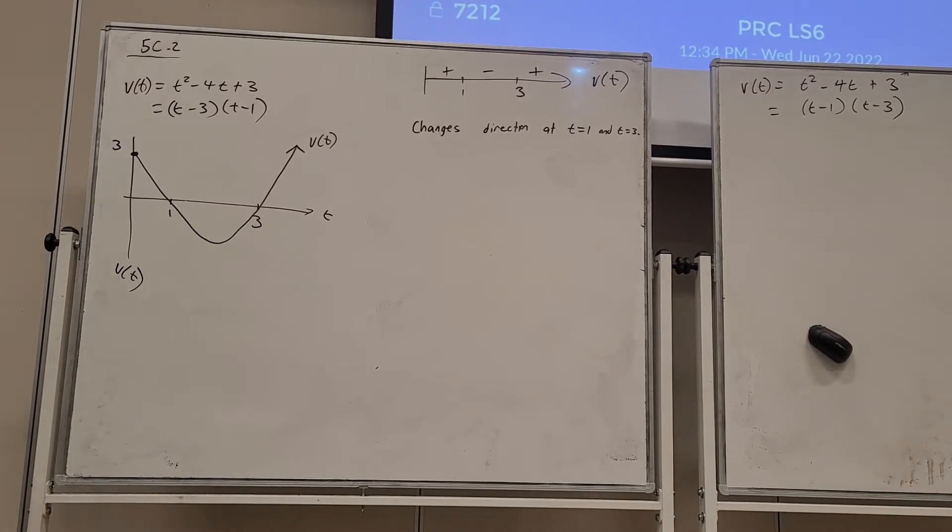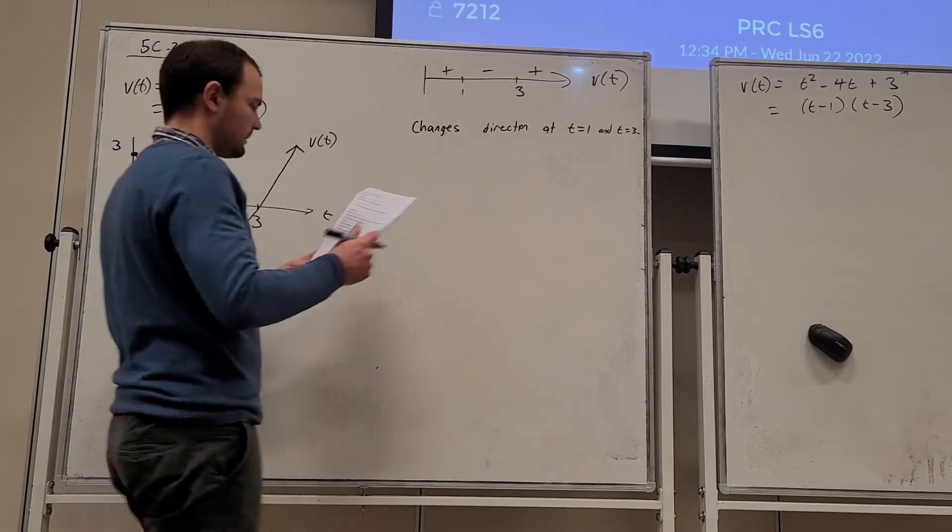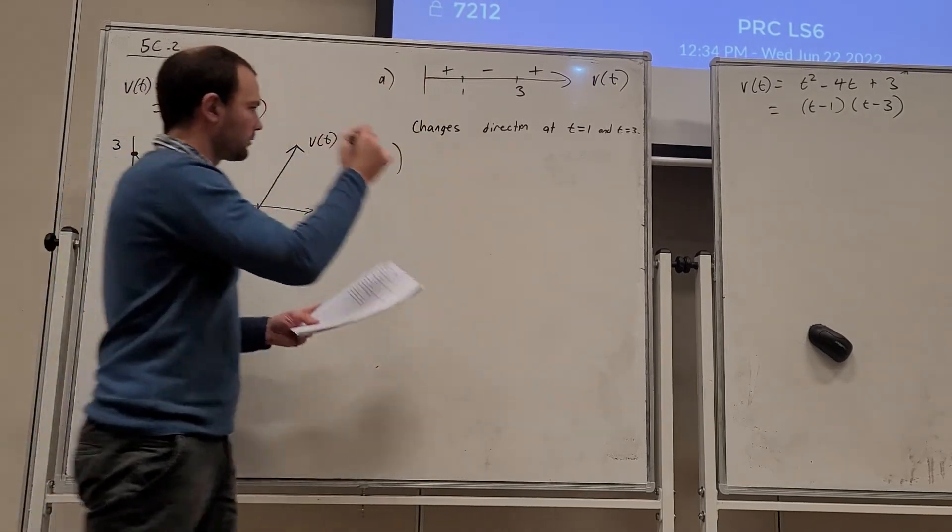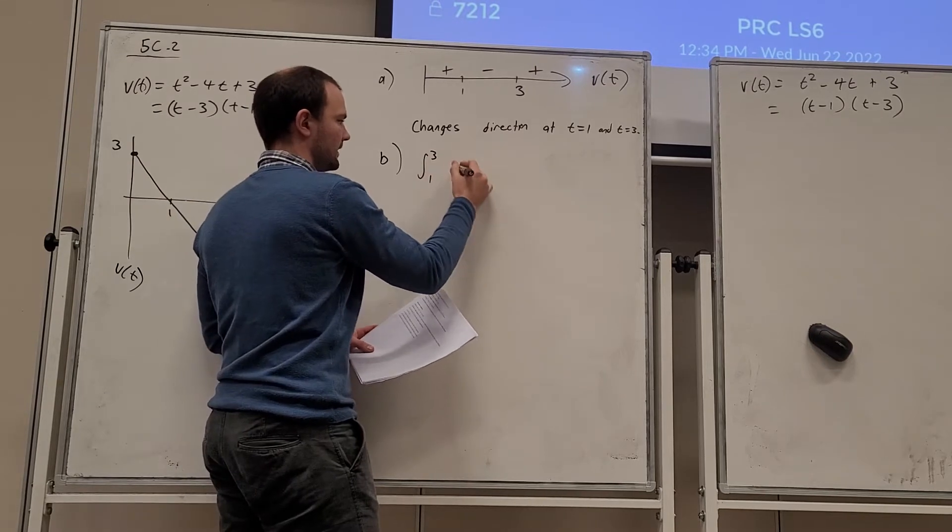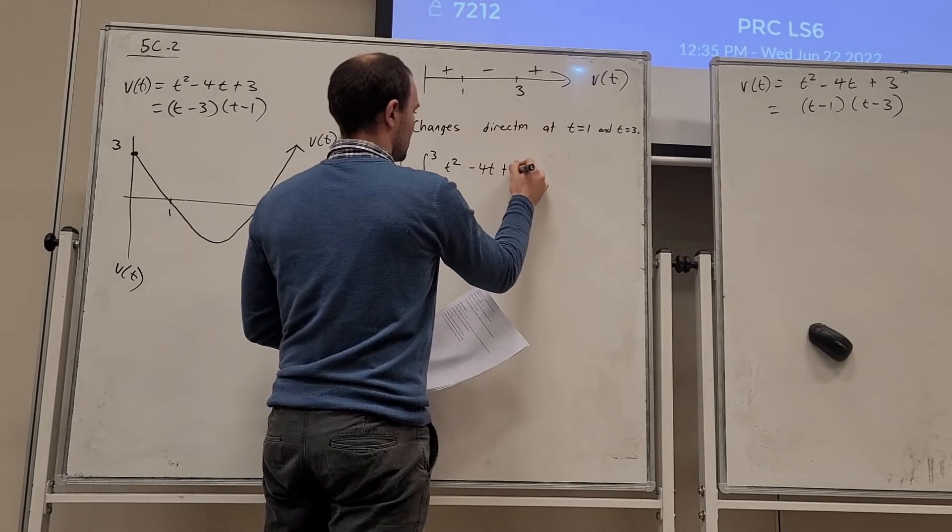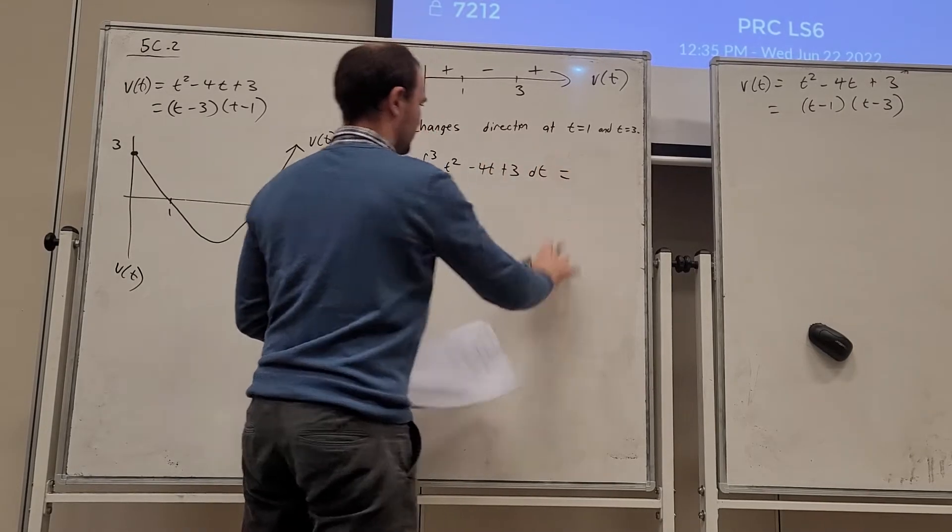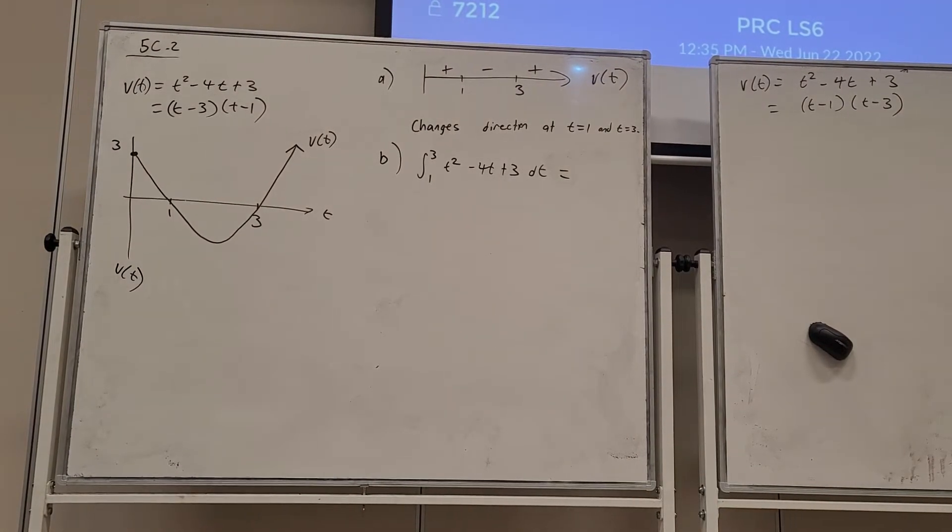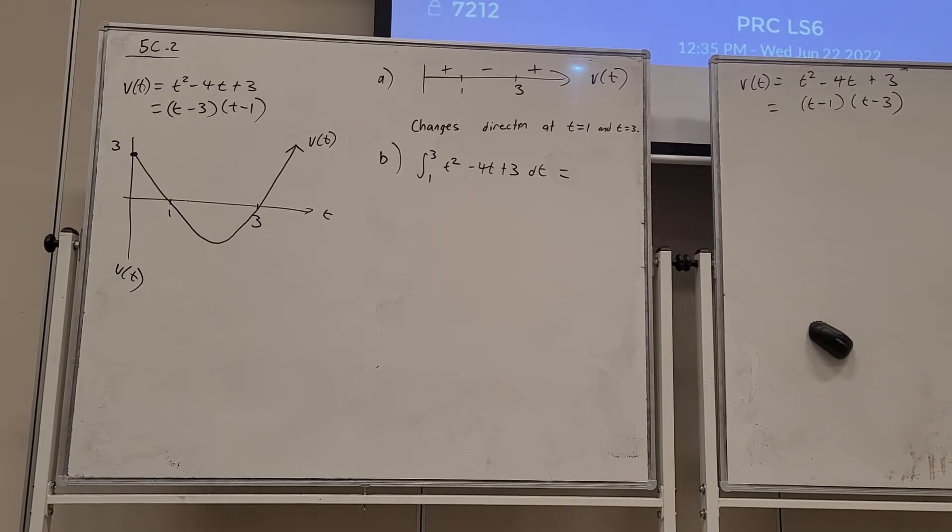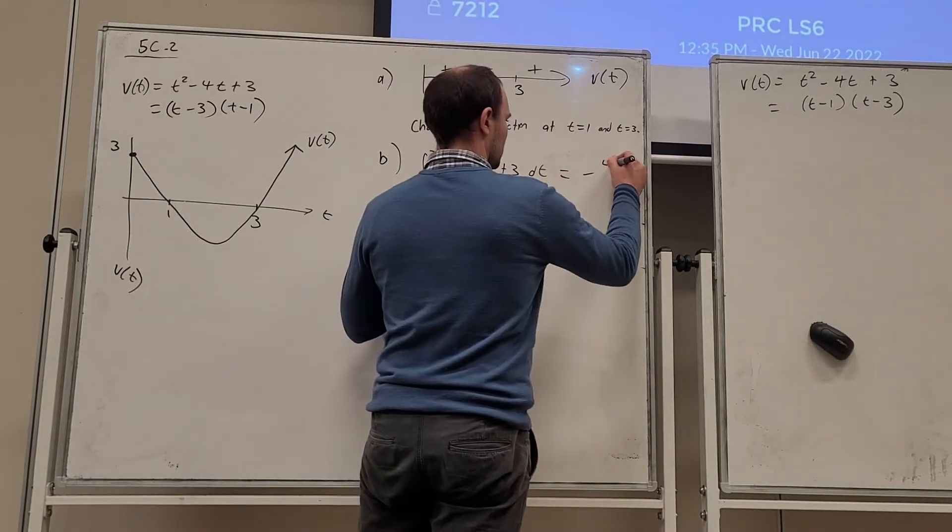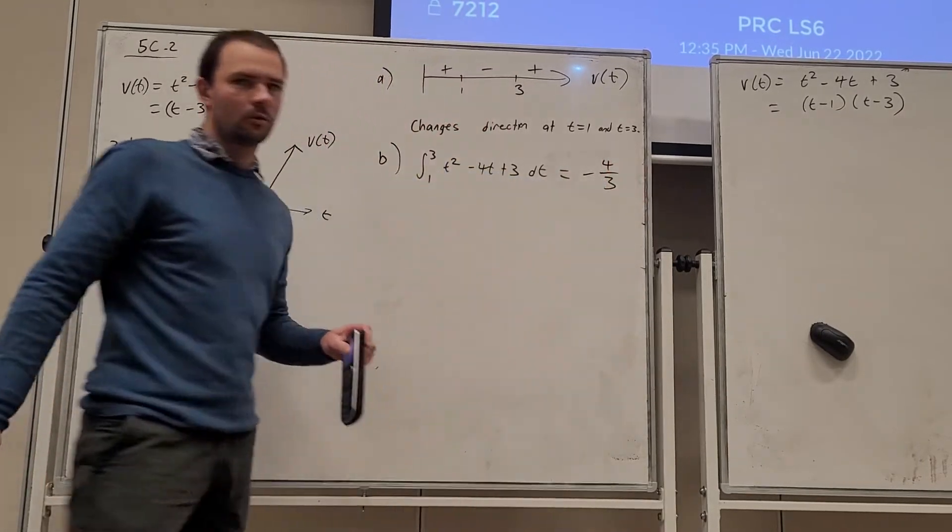So that was part A, part B. Calculate the integral from 1 to 3 of v(t) and state its significance. So we can put this straight in our calculator. It just says calculate. So I'll put this in. And I've got negative 4 on 3.